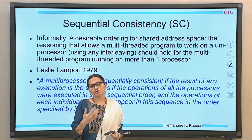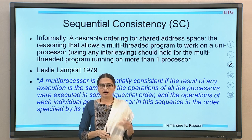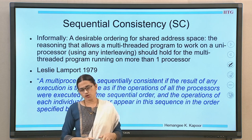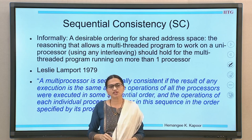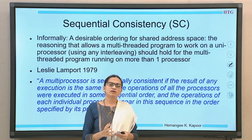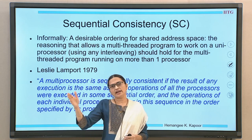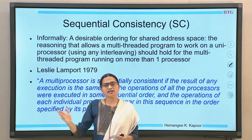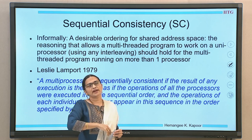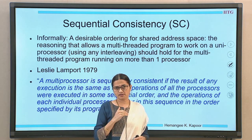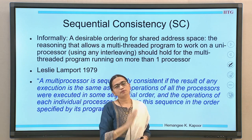Once we understand sequential consistency, we will elaborate on its limitations. Those restrictions will motivate more relaxed memory consistency models, and when we relax something we pay some price — we will need more programming-level or instruction-level constructs to satisfy sequential consistency. Informally, sequential consistency is a desirable ordering for the shared address space that allows reasoning about multi-threaded programs. When multi-threaded programs run on a uniprocessor, multiple threads use the same processor and memory, getting arbitrarily interleaved. If I move those programs to a multi-processor, the outcome should be the same as on a uniprocessor.